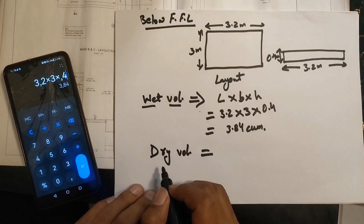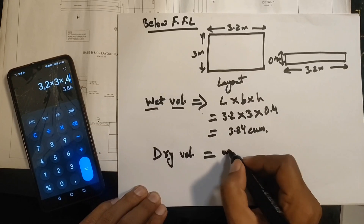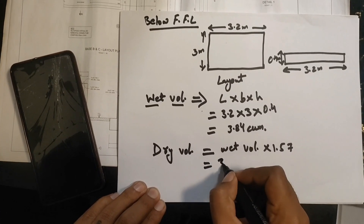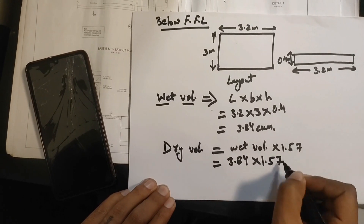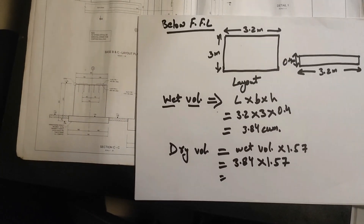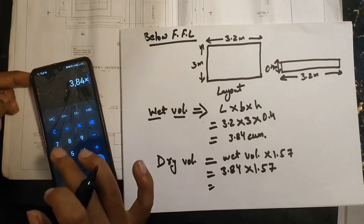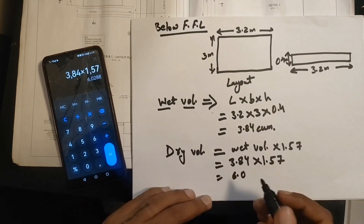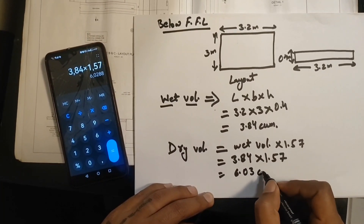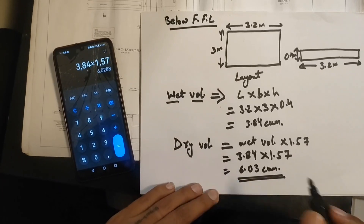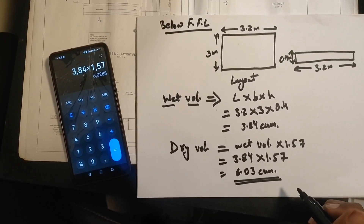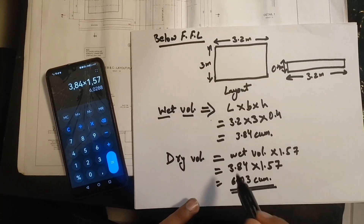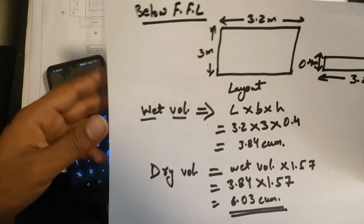As shown in a previous video, the dry volume equals the wet volume multiplied by 1.57. So: 3.84 × 1.57 = 6.03 cubic meters. This is the dry volume of concrete. Now we will calculate the quantity of cement, sand, and aggregate required to make a mixture with a volume of 6.03 cubic meters.